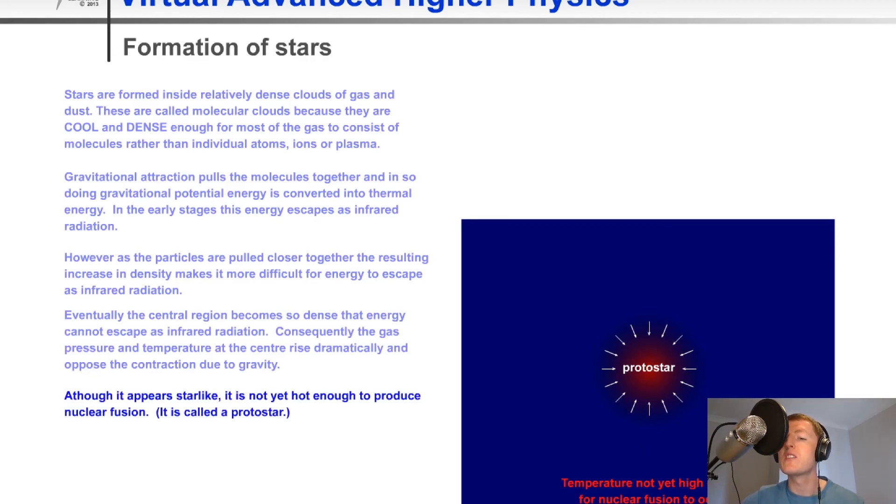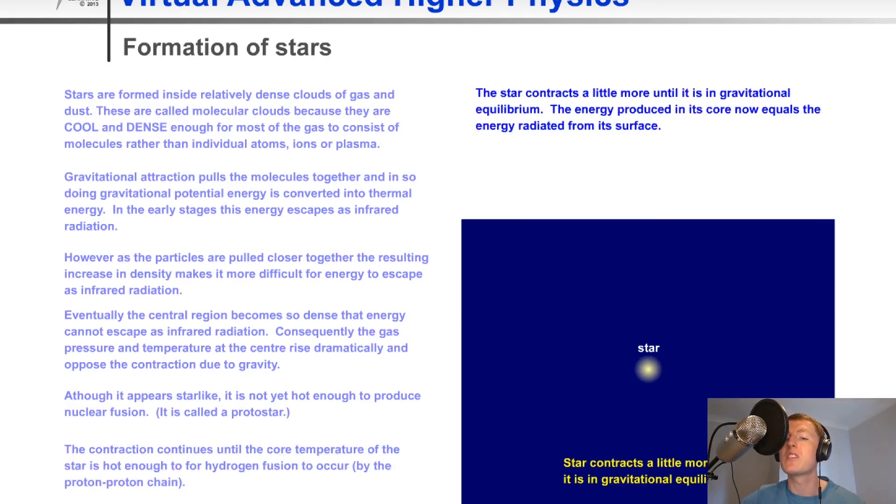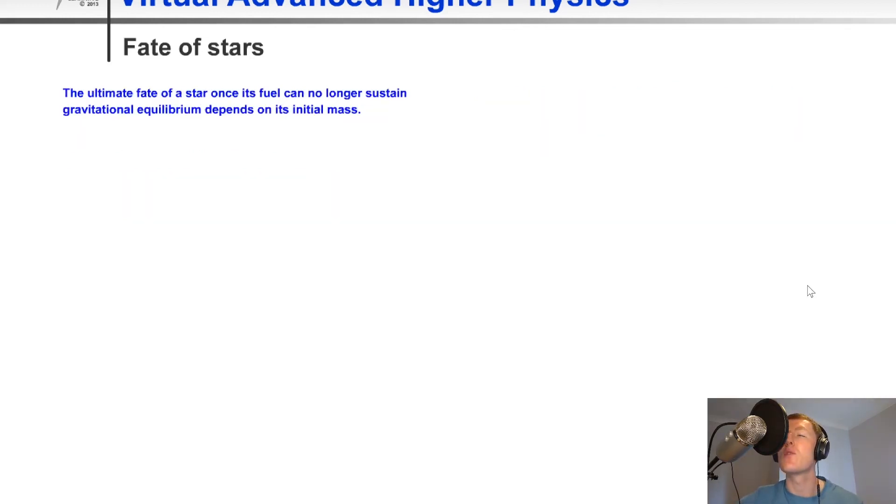This protostar will then continue to contract until the temperature and pressure build up more and more, until eventually it's hot enough for hydrogen fusion to occur. Now hydrogen fusion can occur when the star is hot enough, and we say that the star contracts a little more until it is in gravitational equilibrium. And it's now a main sequence star.